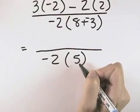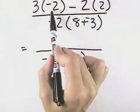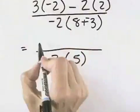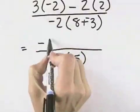So if we look in the numerator, we have 3 times negative 2. A positive times a negative is negative. 3 times 2 is 6.